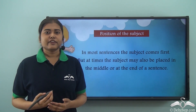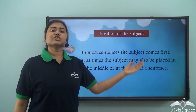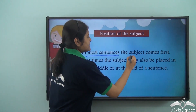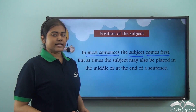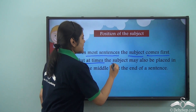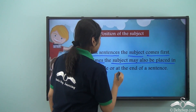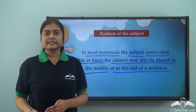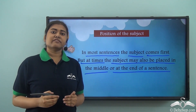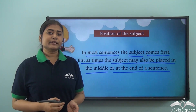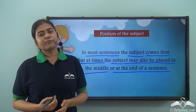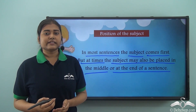So what did we learn today? We have learnt about the different positions of a subject. In most sentences the subject comes first, at the beginning of the sentence. But at times the subject may also be placed in the middle or at the end. When we read a sentence, we first need to identify the verb and then see who or what is performing that verb — that will help us find the subject.